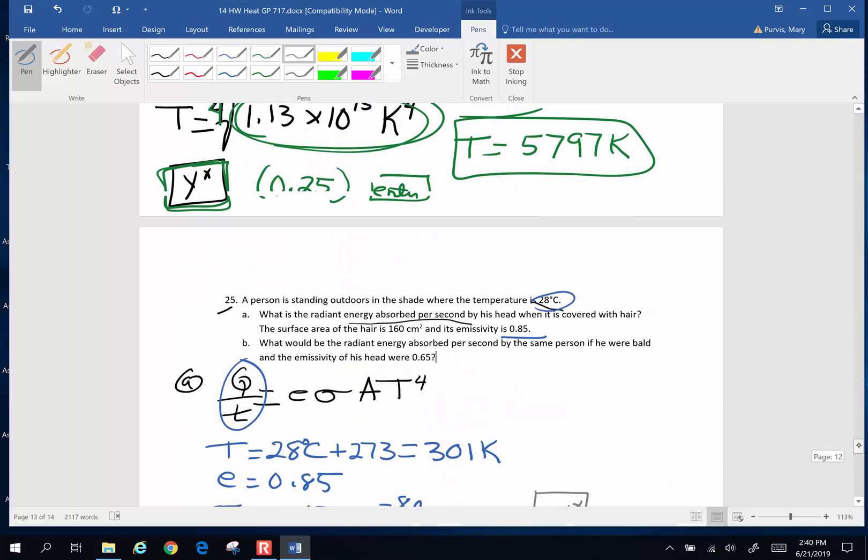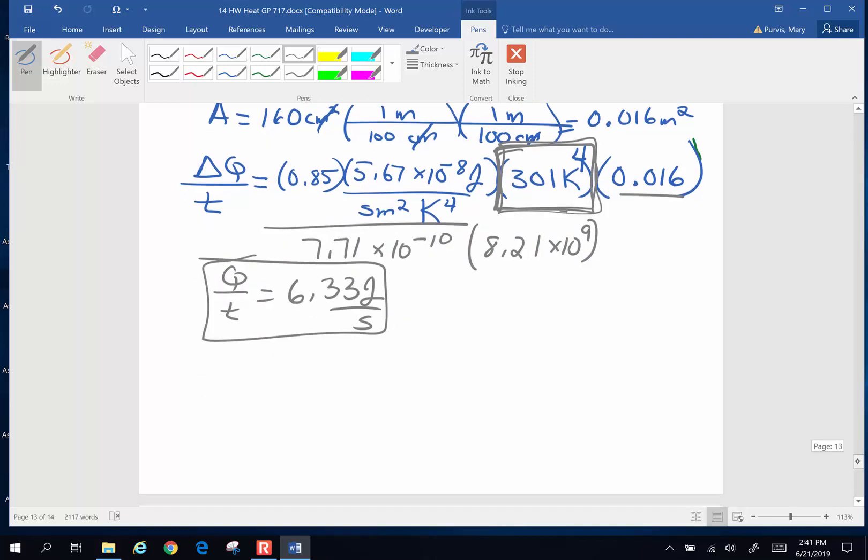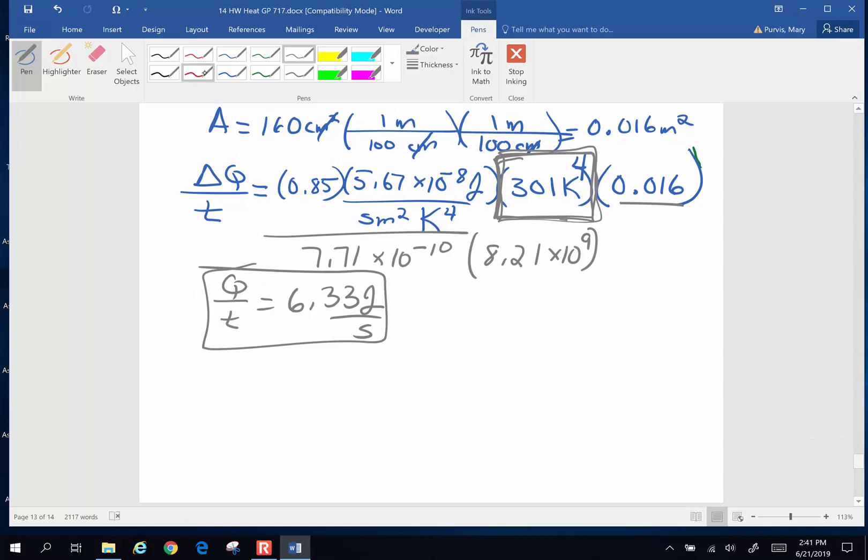Now let's do part four of this problem. What would be the radiant energy absorbed per second by the same person if his head was just too beautiful to be covered by hair, so he had 0.65 as the emissivity? So we're going to do exactly the same problem, but this time I'm going to do 0.65. So I'm not even going to rewrite it. I'm not going to change this because that's going to stay the same.